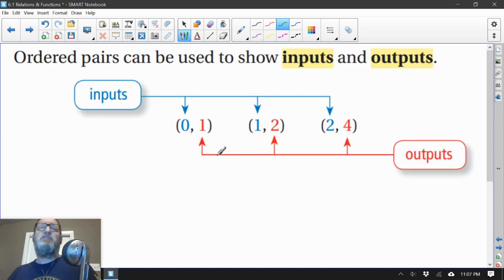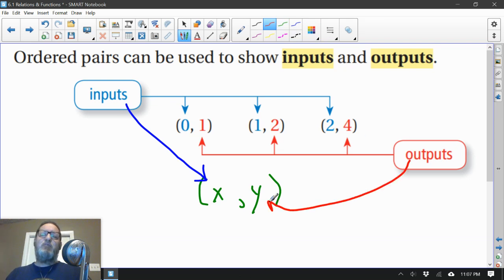Now, ordered pairs are one way to show those inputs and outputs. Ordered pairs, as you might recall, are made up of an x and a y value. So it turns out that the x value is the input, and the y value is the output. So the x is the number you put in—in this case, 0, 1, and 2. And somehow, there is a rule that when you do that rule to the input, or the x, you get the number shown by this letter y.